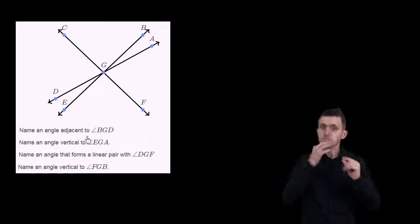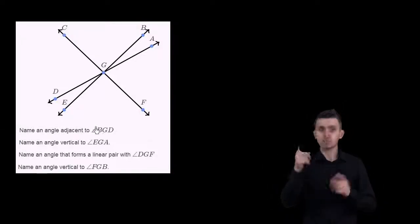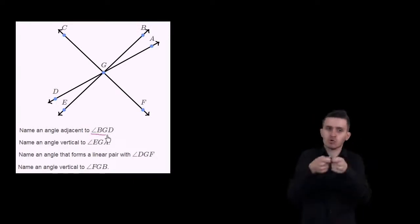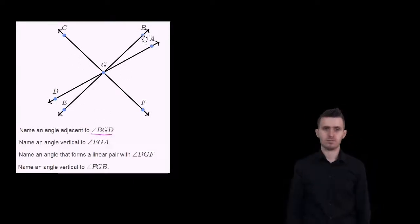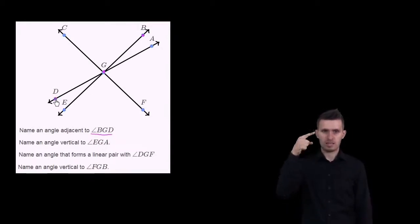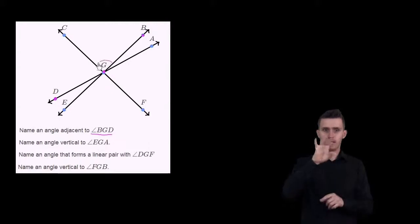We're asked to name an angle adjacent to angle BGD. Let's see if we can pick it out. Here is B, here is G, and here is D right over here.